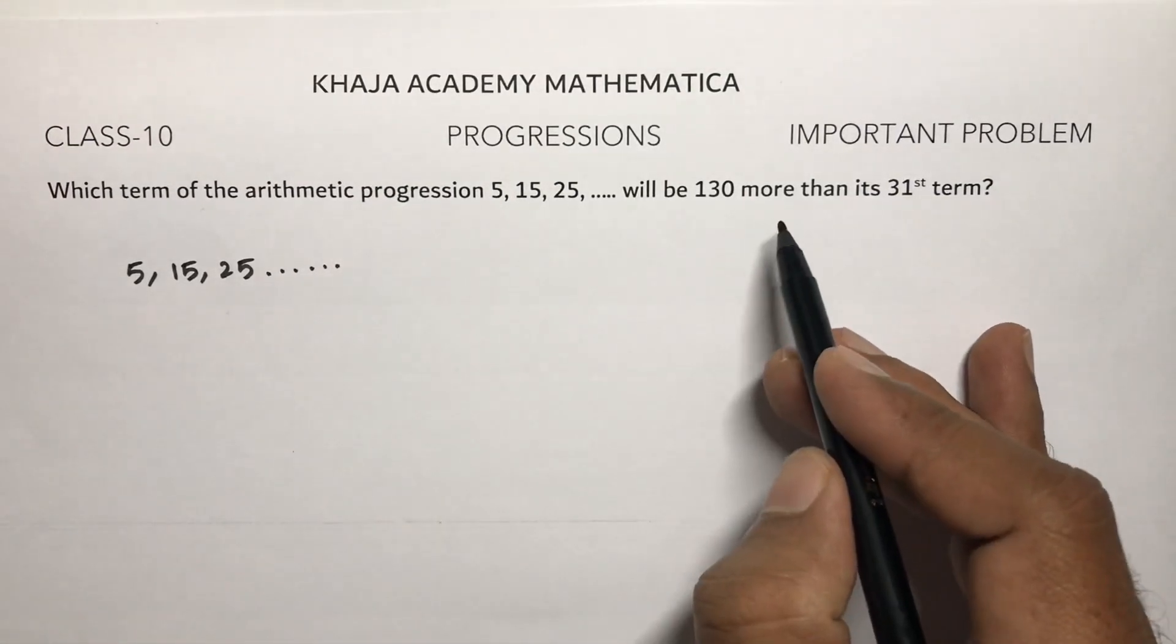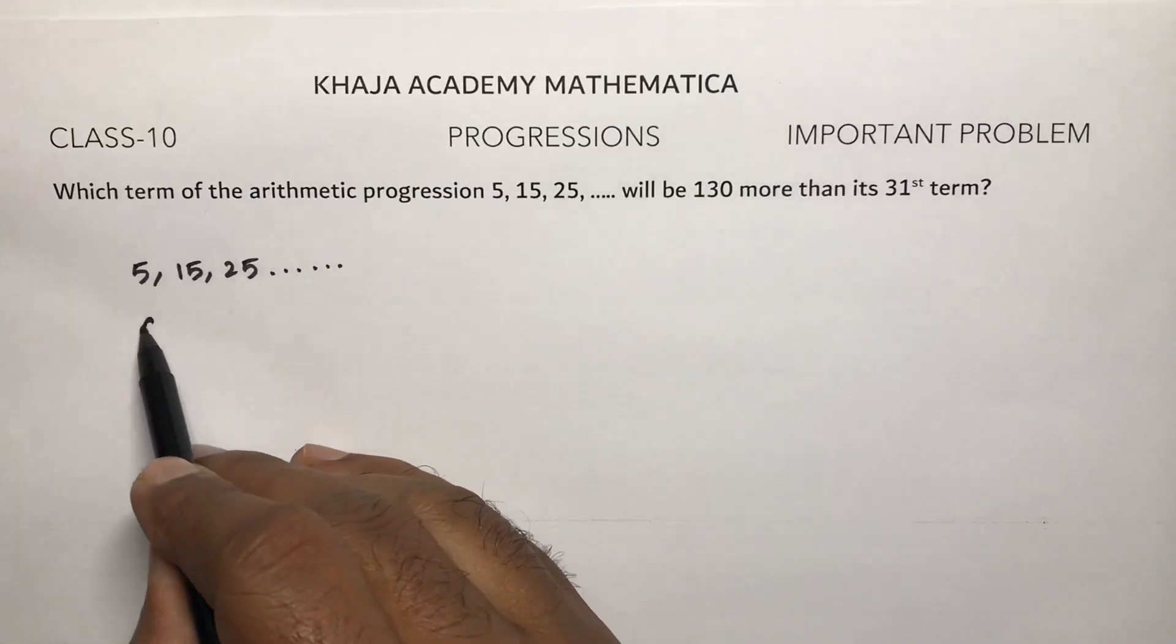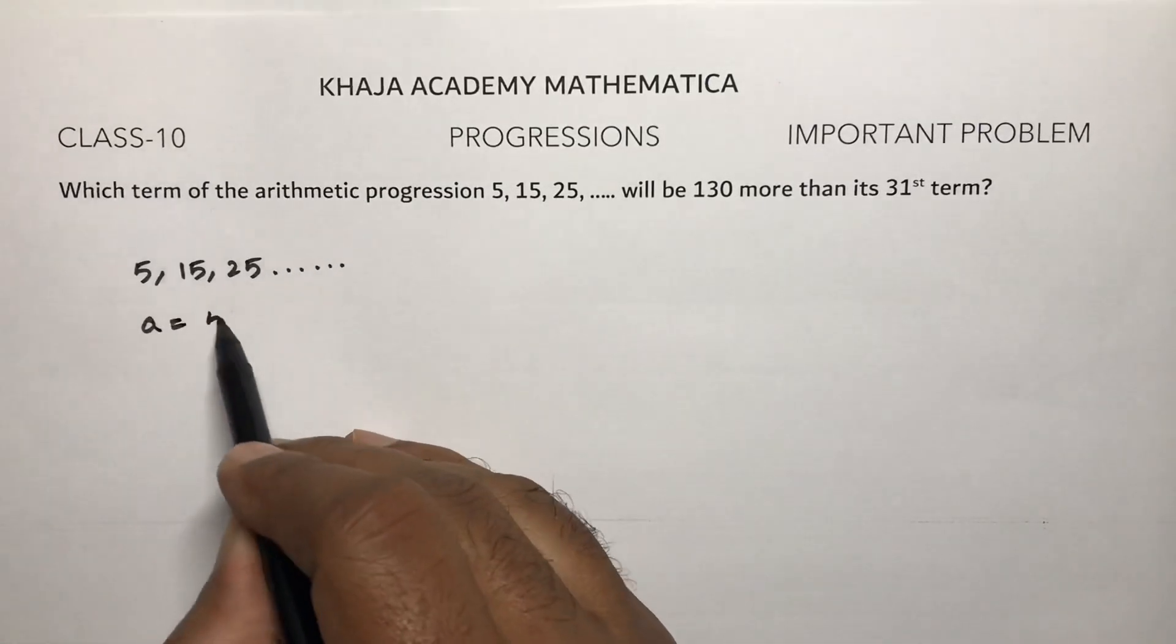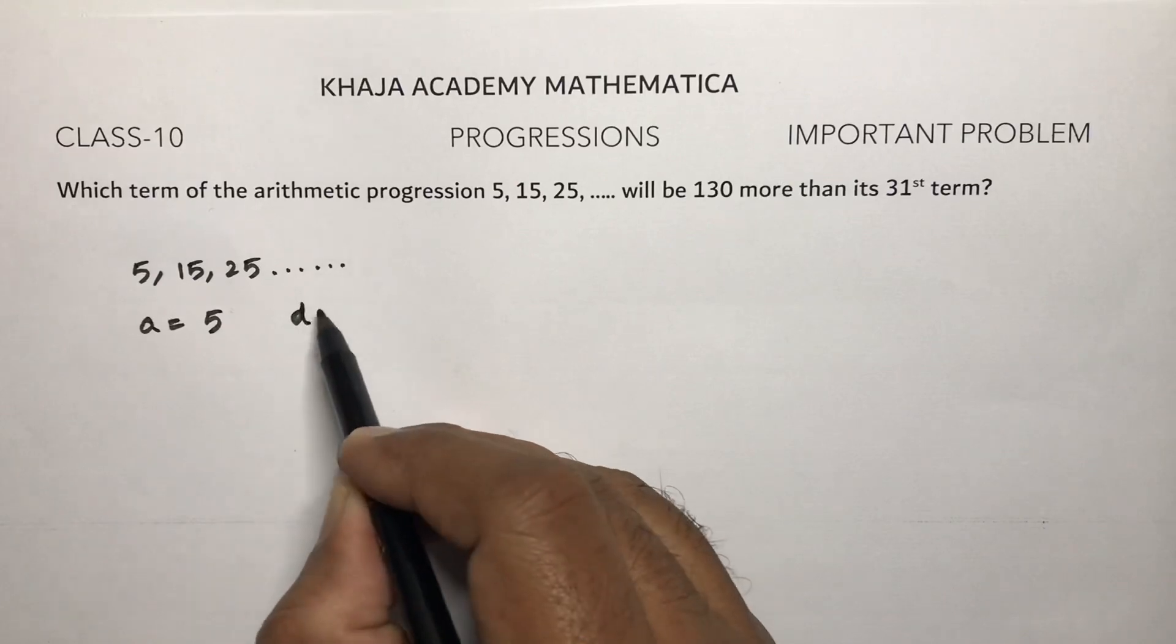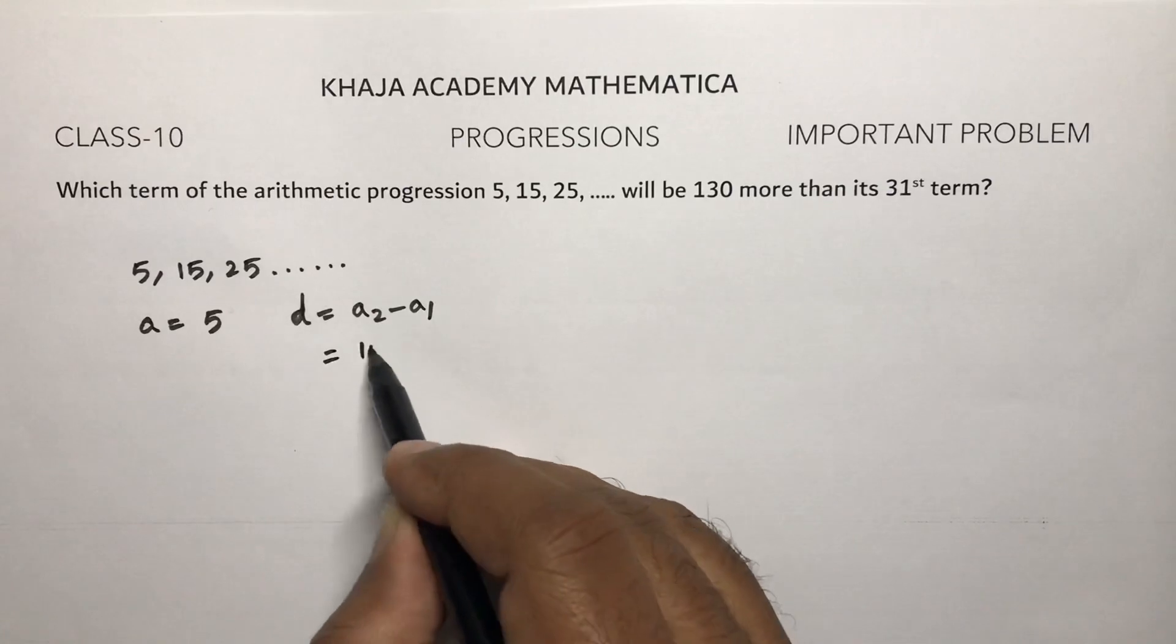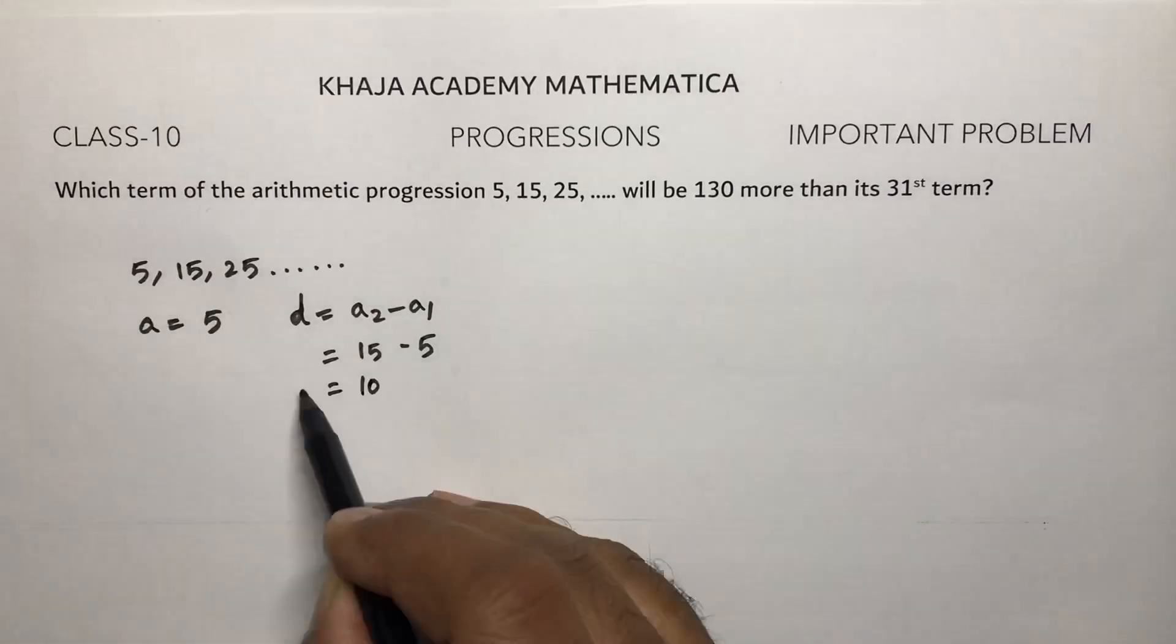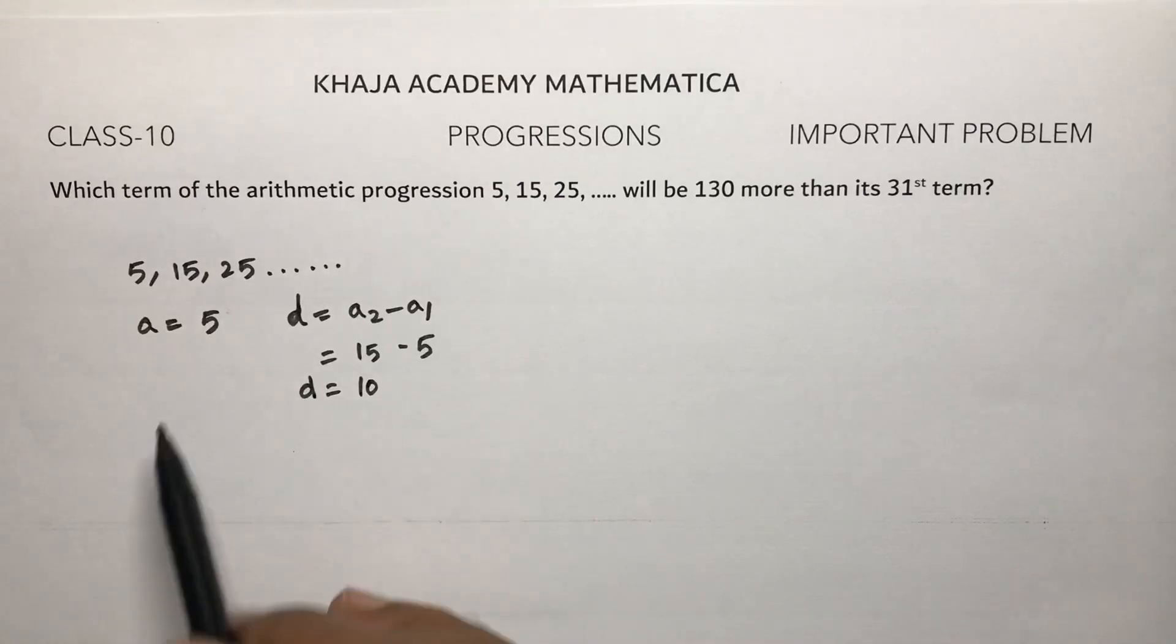First, write a is the first term, which is 5. Then calculate d, the common difference. That is a₂ minus a₁, which is 15 minus 5, so d is 10. So d value is 10, a is 5.